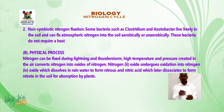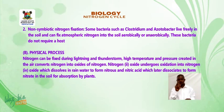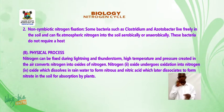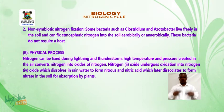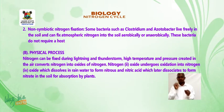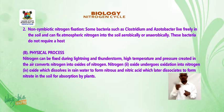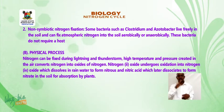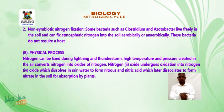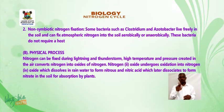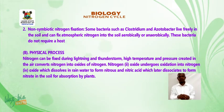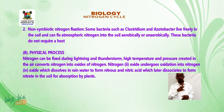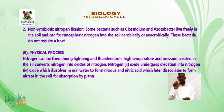Physical process. Nitrogen can be fixed during lightning and thunderstorms. High temperature and pressure created in the air convert nitrogen into oxides of nitrogen. N₂ undergoes oxidation to nitrogen oxides, which dissolve in rainwater to form nitrous and nitric acid, which later dissociate to form nitrates in the soil for absorption by plants.